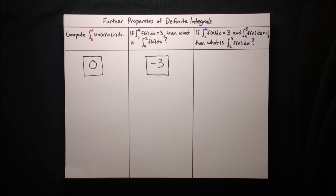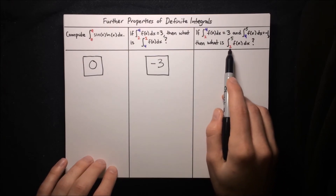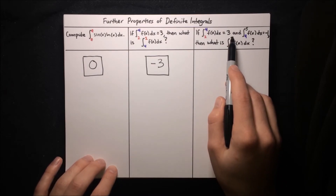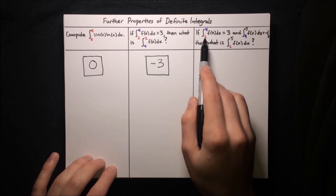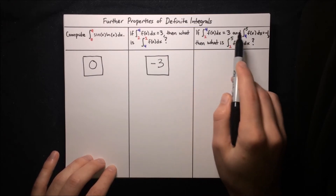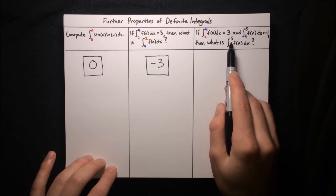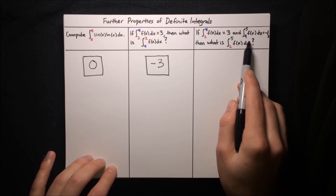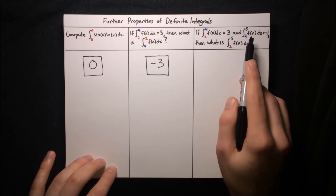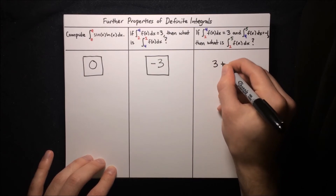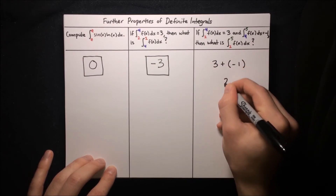Final question: if the integral from 2 to 4 of f(x) dx equals 3, and the integral from 4 to 5 of f(x) dx equals 1, then what is the integral from 2 to 5 of f(x) dx? We break up the area from 2 to 5 into two regions: from x=2 to x=4, and from x=4 to x=5. Putting these two areas together gives the full area, so the result is 3 plus 1, which is 4.